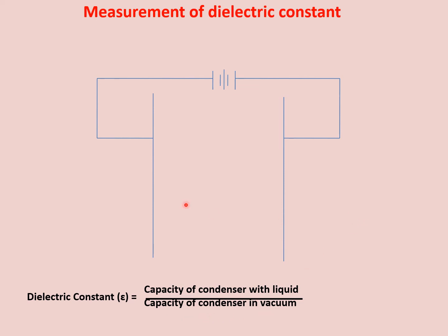जो parallel plate condenser है, इसमें दो plates present होती हैं, जिनको हम attach करते हैं एक storage battery के साथ. यह storage battery का एक end positive charge का है और दूसरा negative charge का. जब आप इस plate को connect करोगे, electrons will move towards the positive terminal of this battery, जिससे इस plate पे positive charge develop होंगे.